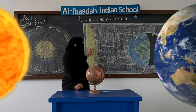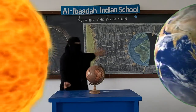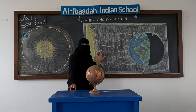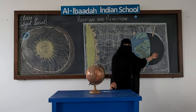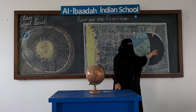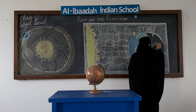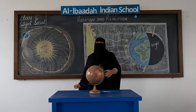Here you can see the sun is giving light. The part of the earth that is facing the sun has day. The part of the earth which is not facing the sun — the light does not reach there — and that part has night.